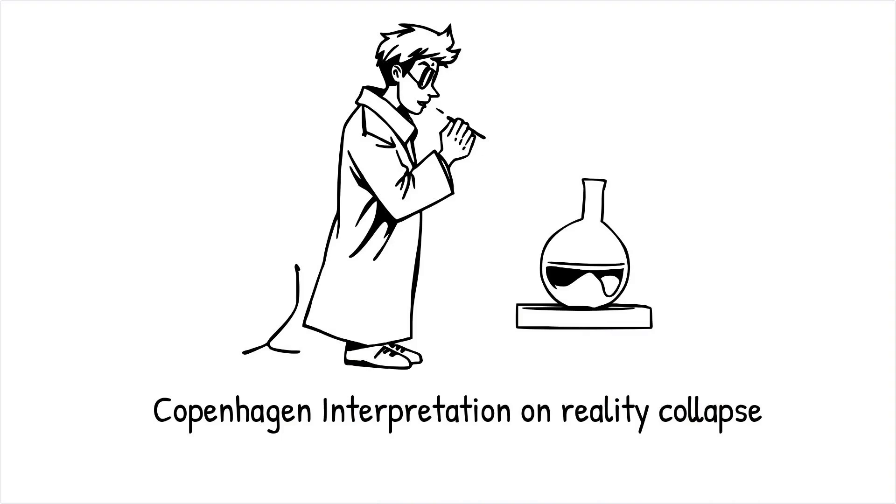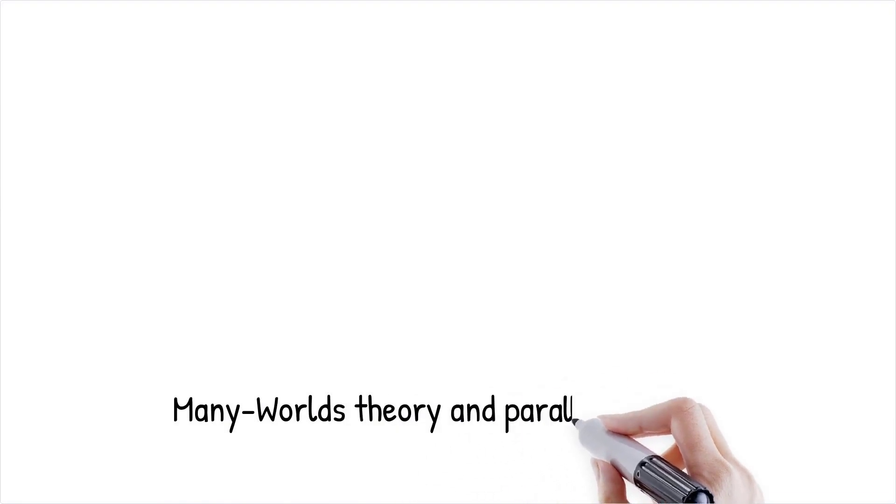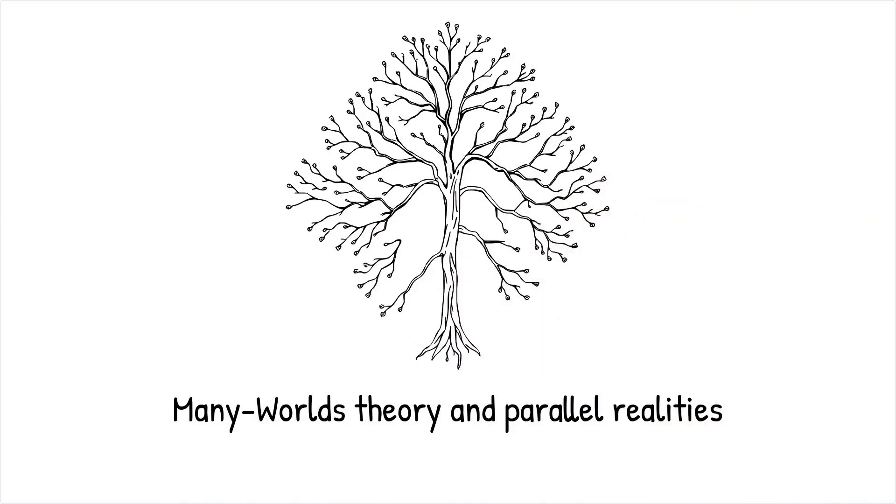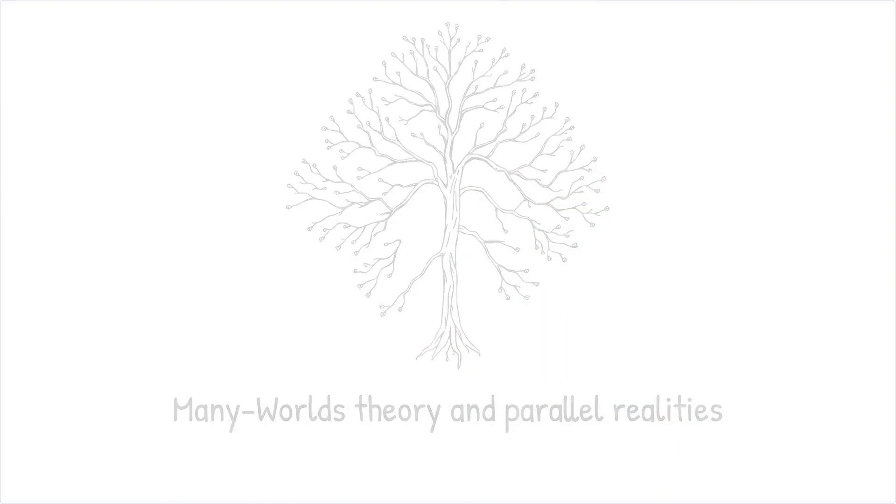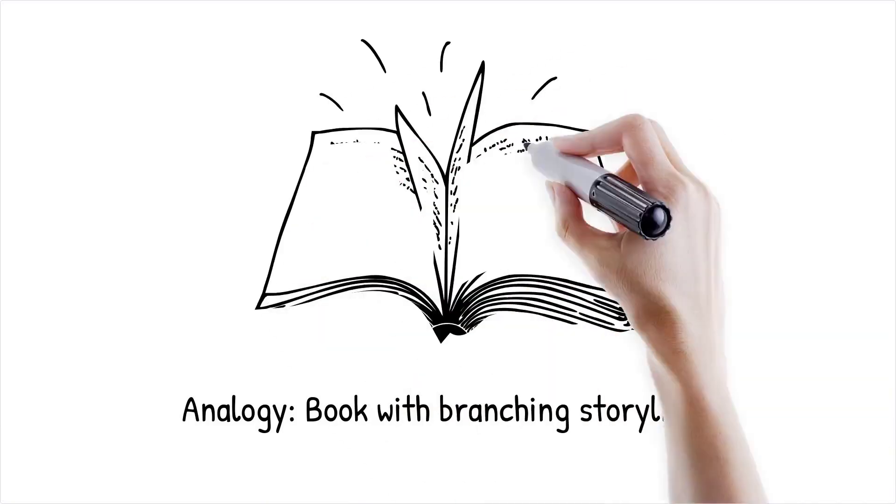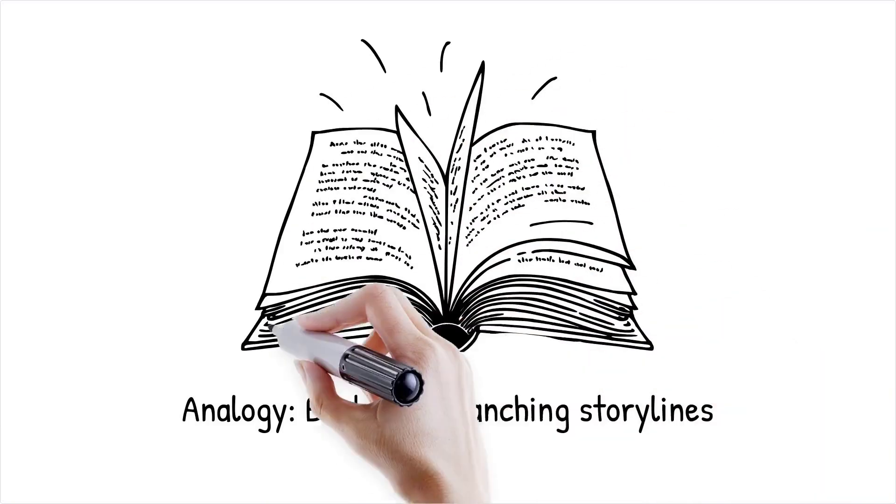The many worlds theory, for instance, suggests that every time we make a choice, a separate version of reality is created, leading to infinite possibilities. It's like a book where every decision branches into a new storyline, and all versions exist simultaneously.